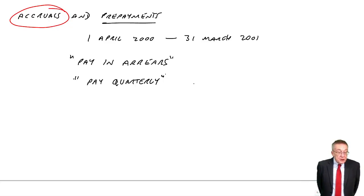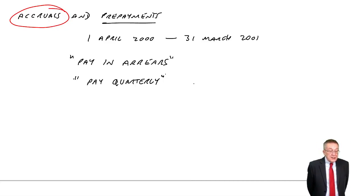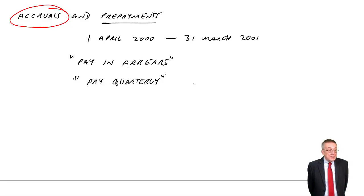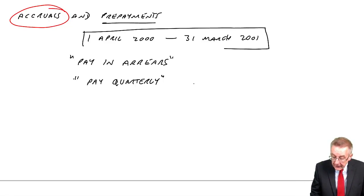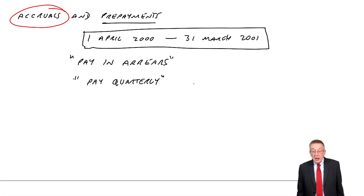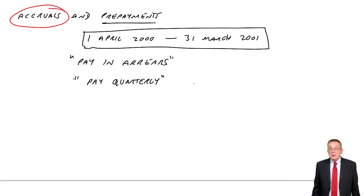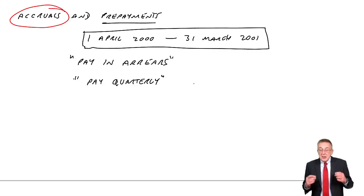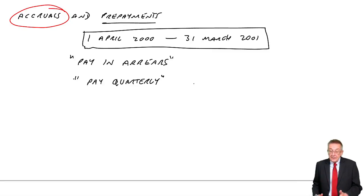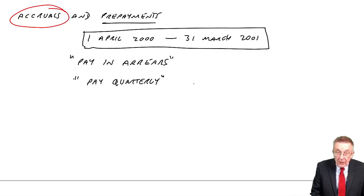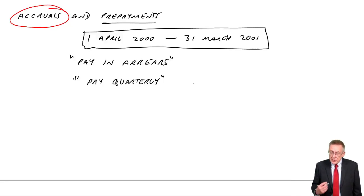The question asks to show extracts from the statement of profit or loss and statement of financial position. As always for expenses, I want to know what is the total cost for his 12 months. What matters for the statement of profit or loss is not the cash that was paid during the period, but how much did it cost him to use the telephone for those 12 months — whether he's actually paid or he hasn't paid. There are several ways to set it up, but because of the way exam questions are, I'll use the most efficient approach.